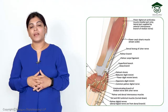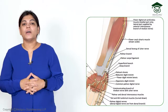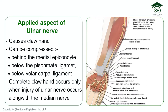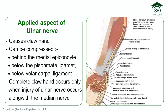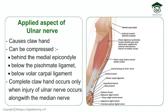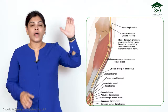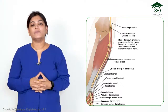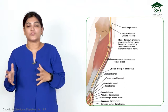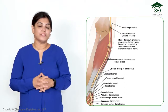For the applied anatomy of the ulnar nerve: injury causes a claw hand deformity. The ulnar nerve can be compressed at various levels — behind the medial epicondyle, below the pisohamate ligament, or below the volar carpal ligament. Complete claw hand only occurs when the ulnar nerve is injured along with the median nerve.